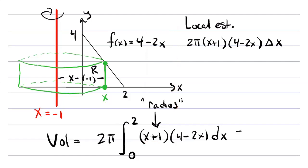It's always the distance from your shell segment to the axis of rotation. Adding those things together gives our estimate for the volume; taking the limit as delta x goes to zero gives us the integral. Putting the 2π in front, with x varying between 0 and 2, we integrate (x plus 1) times (4 minus 2x) dx. You can check that this integral comes out to be 40π over 3 — units cubed, for volume.